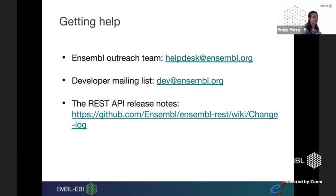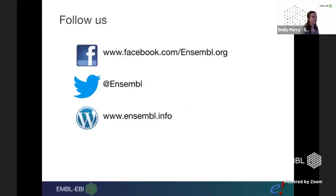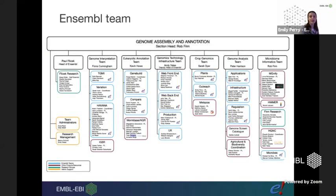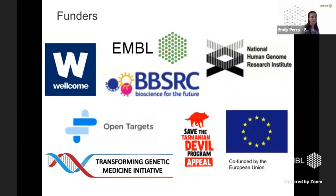If you're working with our REST APIs or any of our data, you can email us at helpdesk@ensembl.org. There's also our developer mailing list for really technical problems. You can check out our release notes and follow us on social media — we talk about updates to our APIs when things change. We recently had a change in how we present data on our EQTL endpoints, which required a blog post in case anyone had scripts that needed updating. Thanks for coming.